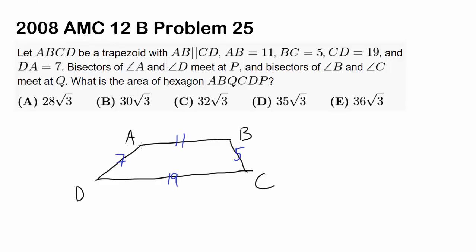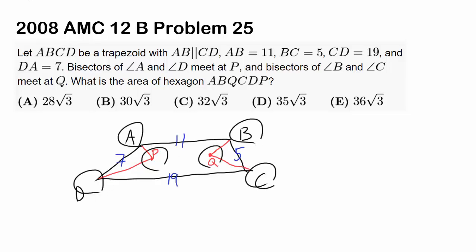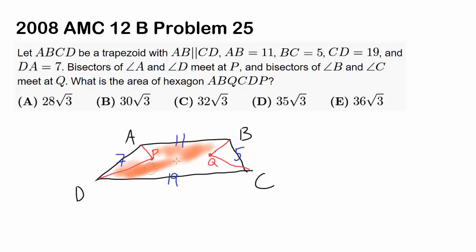The bisectors of angles A and D meet at P. So you're bisecting this angle, dividing it into two, and bisecting this angle, and they meet at a special point named P. The bisectors of angles B and C do the same thing and they meet at Q. They want us to find the area of the hexagon ABQCDP — basically this shaded area inside the trapezoid. This looks concave but it is a hexagon with six sides, and that area is what we are being asked to find.